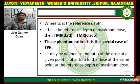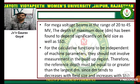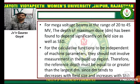Tissue Maximum Ratio (TMR) is a special case of TPR. It is defined as the ratio of the dose at a given point in the phantom to the dose at the same point at the reference depth of maximum dose. For megavoltage beams in the range of 20 to 40 megavolts, the depth of maximum dose (dm) depends significantly on field size as well as SSD (source to skin distance). For the calculation function to be independent of machine parameters, they should not involve measurement in the build-up region.